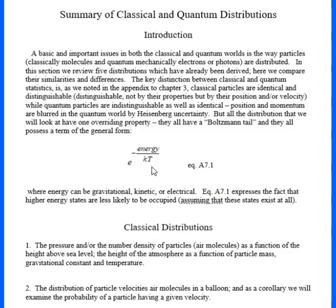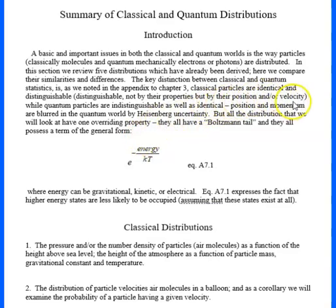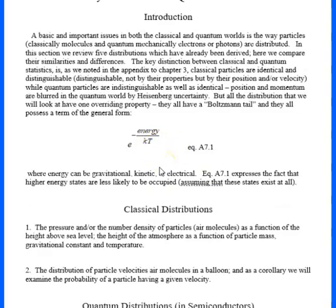The key difference between the classical and the quantum mechanical is, as we mentioned in the appendix to Chapter 3, that's kind of a summary of statistical mechanics: classical particles are identical and distinguishable — distinguishable not by their properties, but by their position and/or velocity — whereas quantum particles are not only identical, but they are indistinguishable. You cannot tell them apart, because Heisenberg tells us that in the quantum world, position and velocity are smeared out. All of these distributions, however, have this really wonderful Boltzmann term.